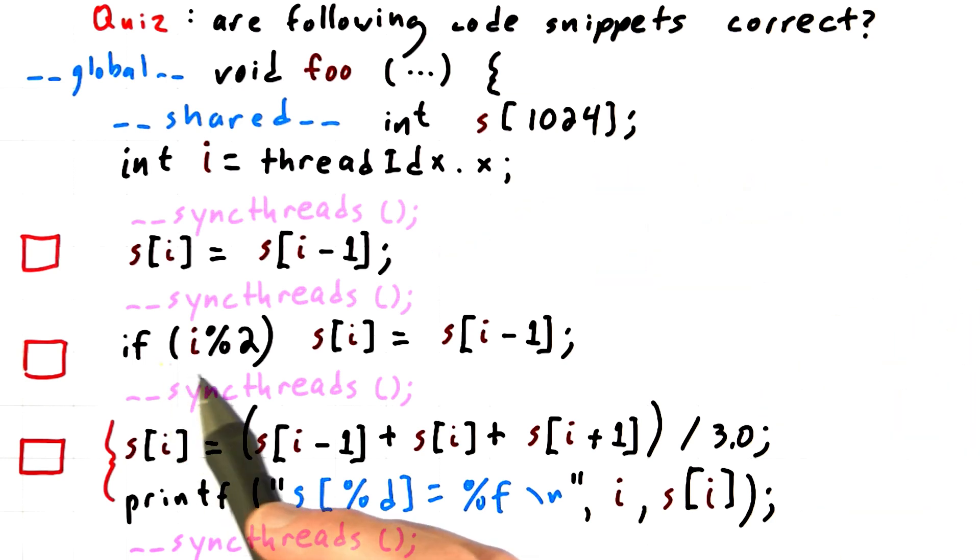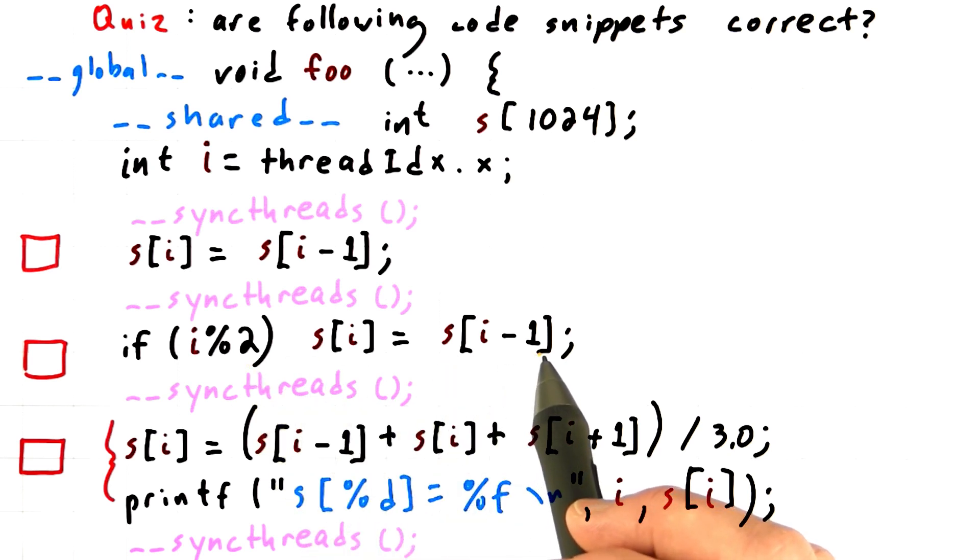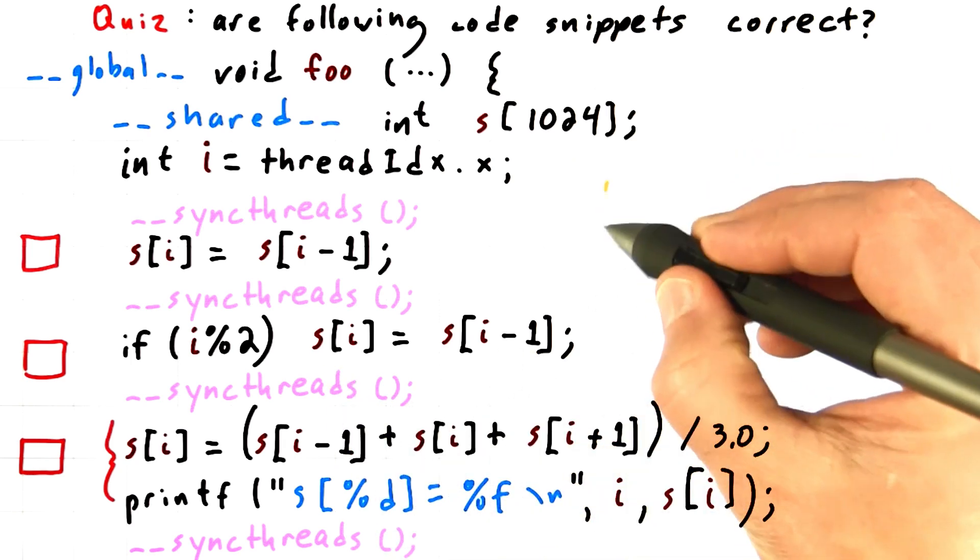So what about this second example? Here, what this if statement does is it basically ensures that only the odd threads are going to try to read from s sub i minus 1 and write to s sub i. So if you think about this,